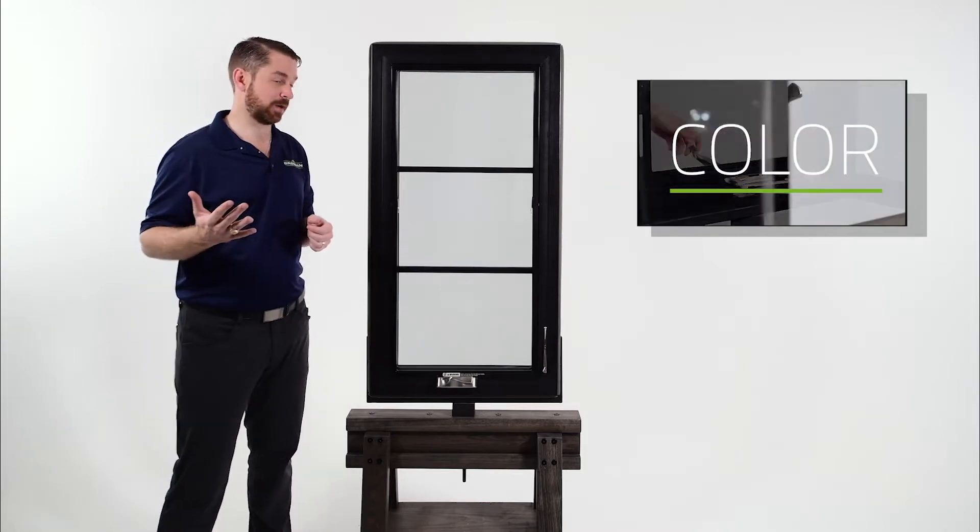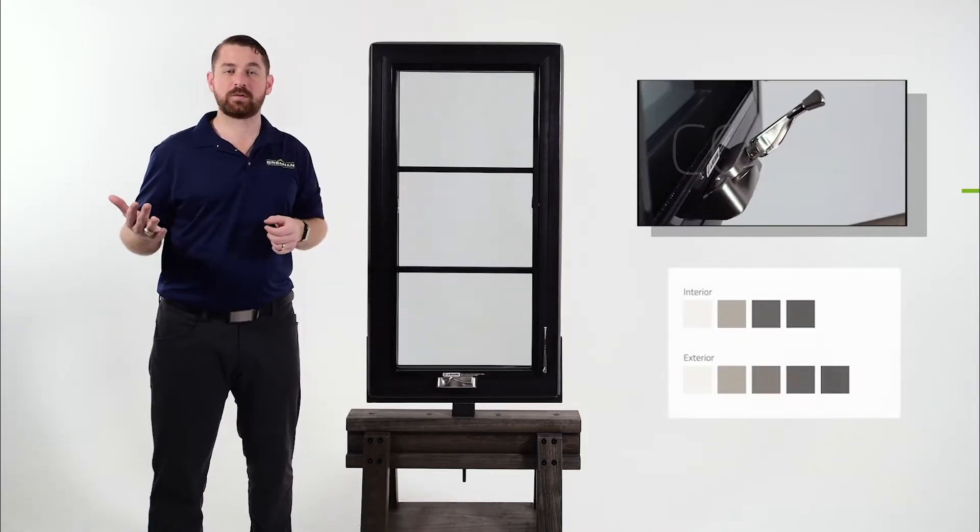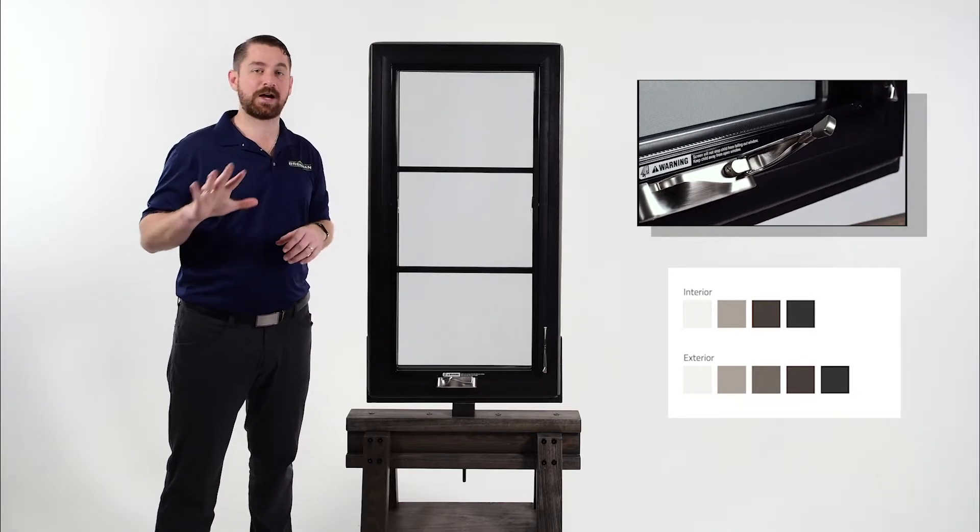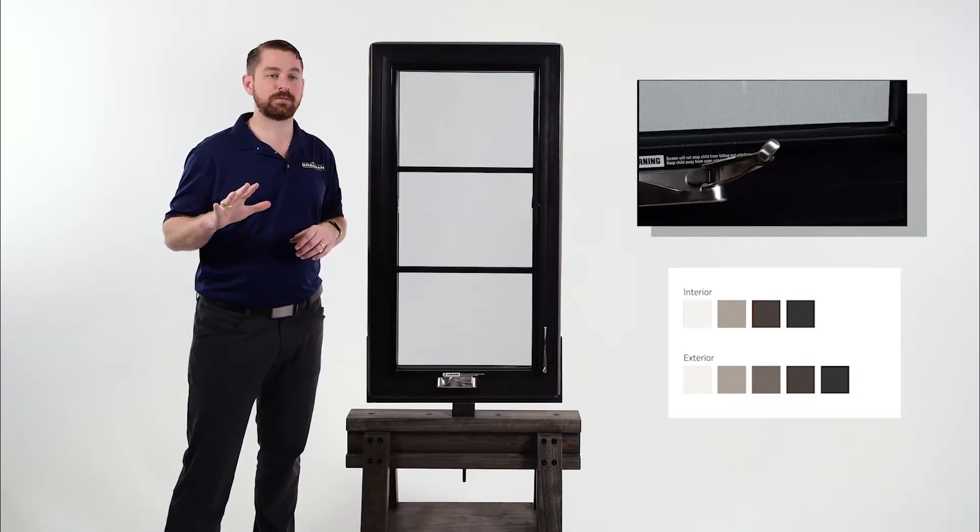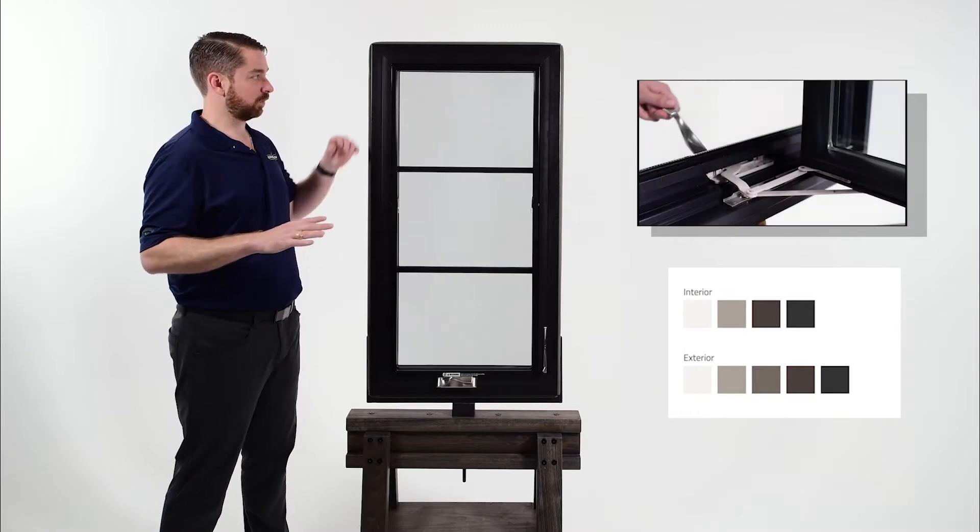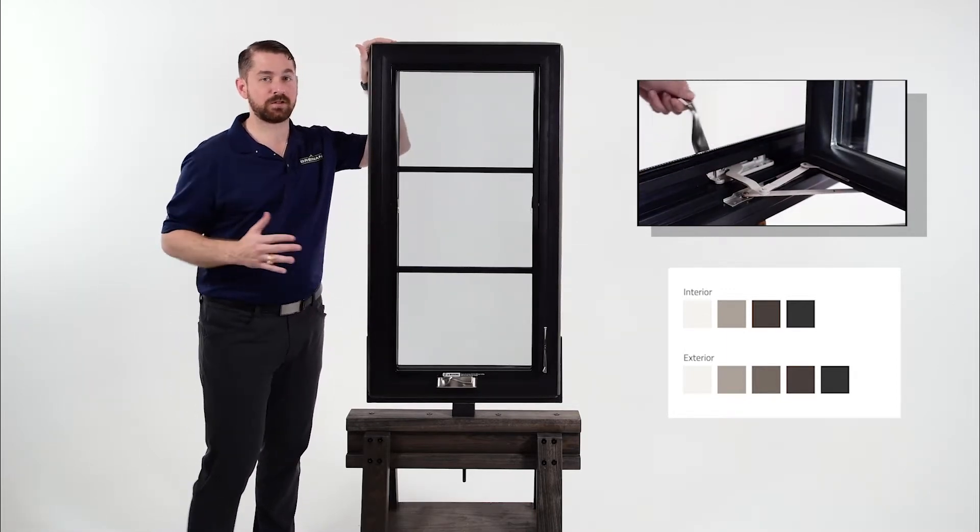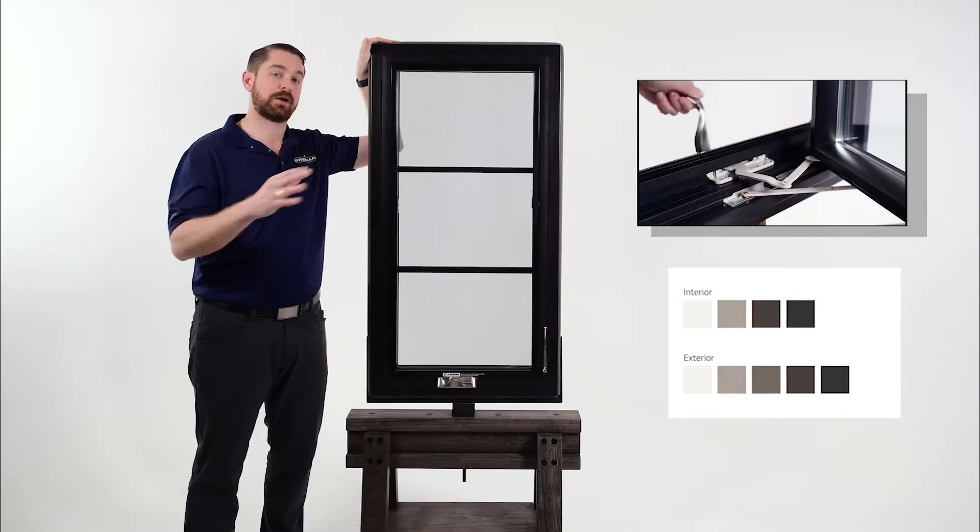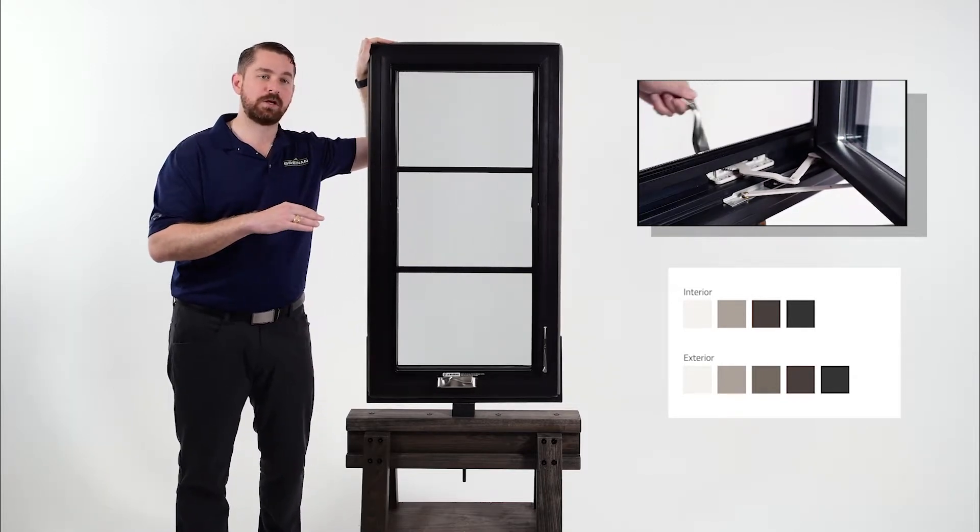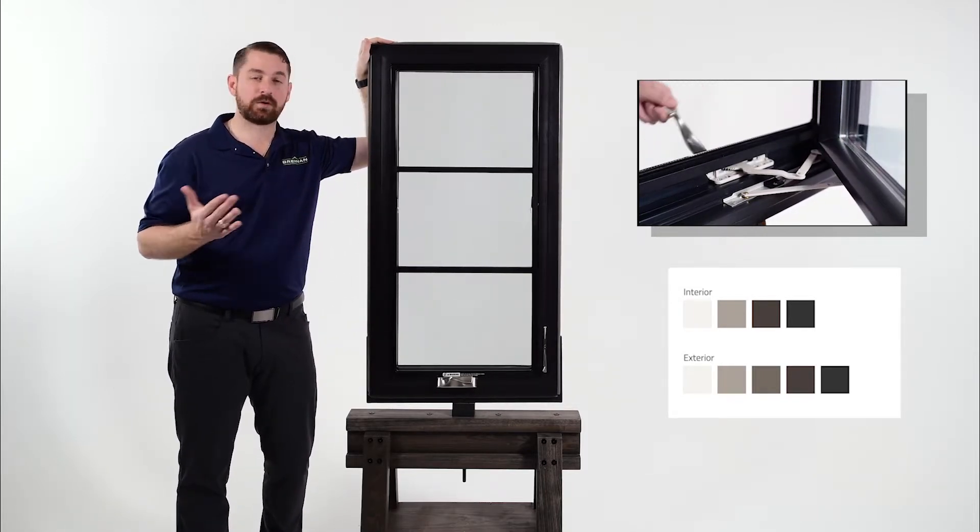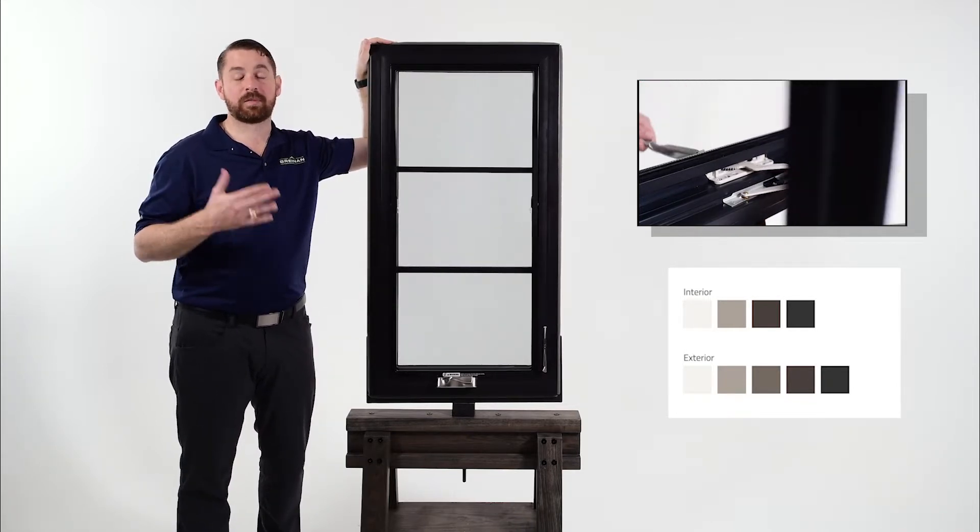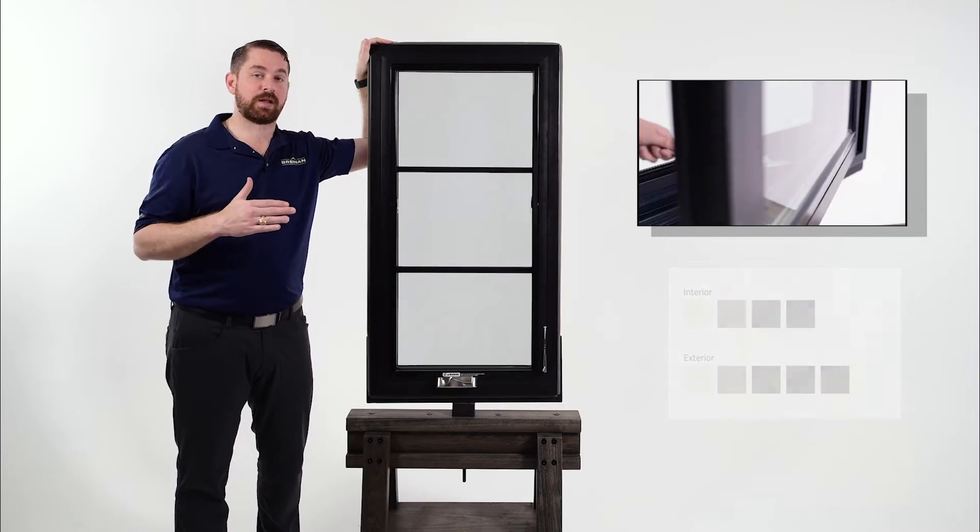So finally, let's talk about color. The 100 series windows come in four interior color options and five exterior color options. One of the things that really sets this product apart is Anderson is one of the few vendors that does a black interior and exterior on this window. Most other vinyl window manufacturers or replacement window companies will offer a black exterior, but they do not offer a black interior.